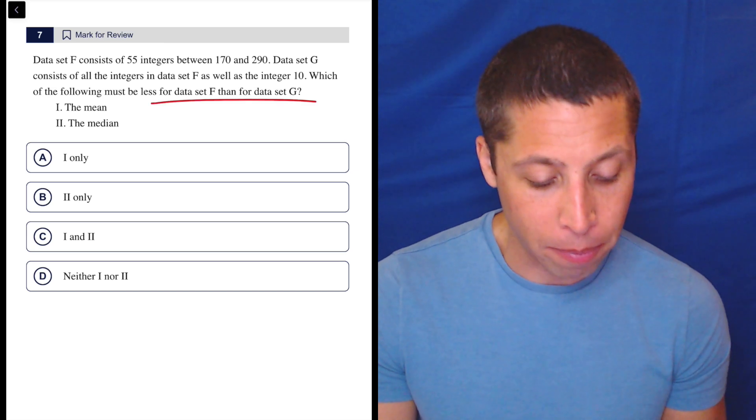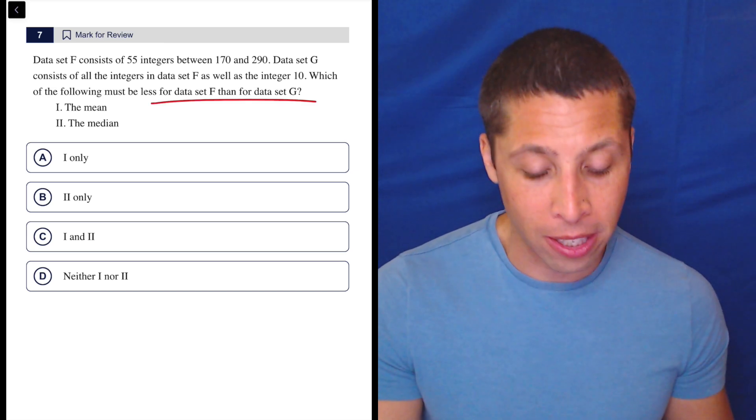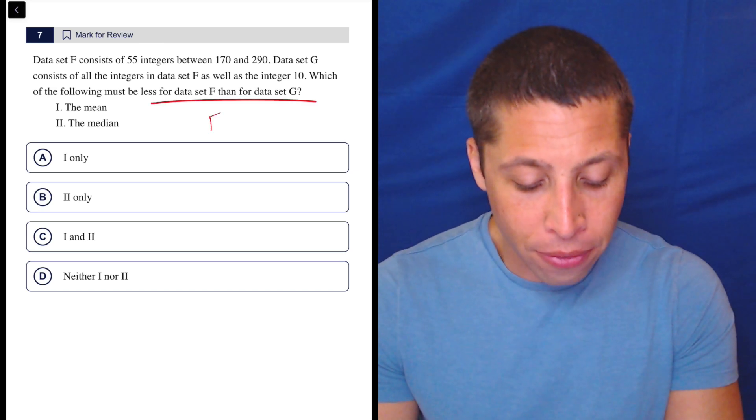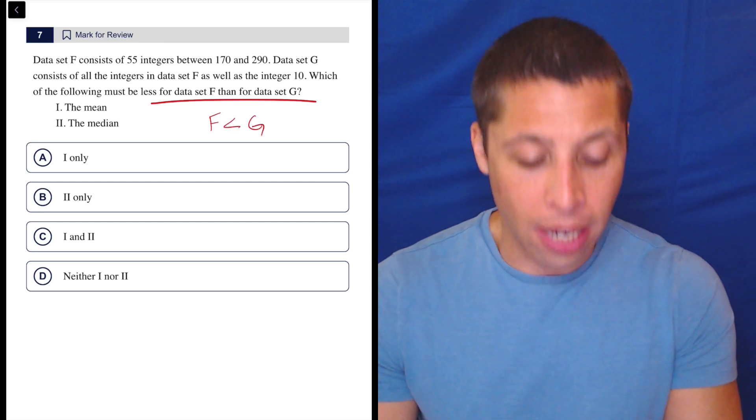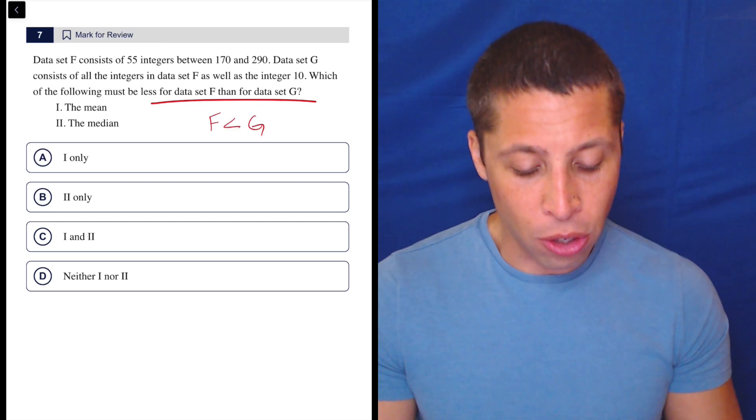So just be really clear, I think some people make a mistake here because they just misread this part. So we're looking for F being less than G, right? So what do we do though?